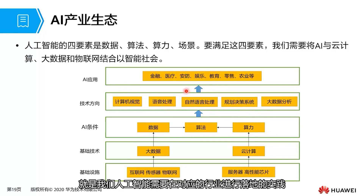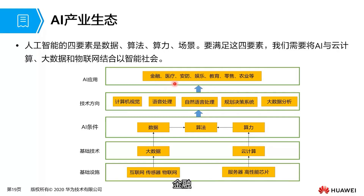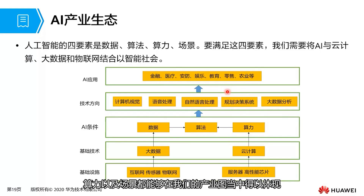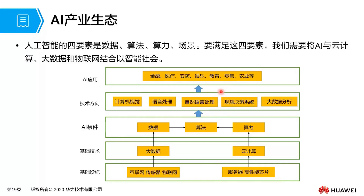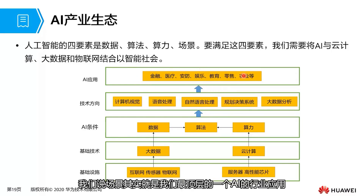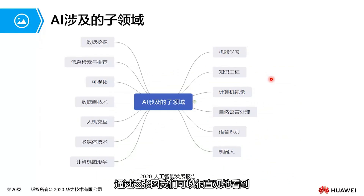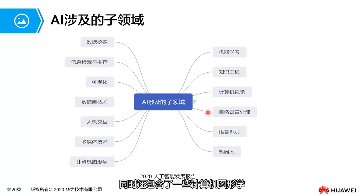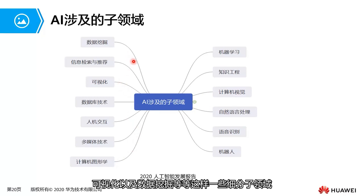Moving up a level, artificial intelligence needs to be practically implemented in corresponding industries such as healthcare, finance, security, and entertainment. Applying artificial intelligence involves four key elements: data, algorithms, computing power, and scenarios. In the industry diagram, scenarios represent the top-level AI industry applications. We can also see subfields of research related to artificial intelligence, which include not only machine learning and AI application technologies, but also areas such as computer graphics, databases, visualization, and data mining.